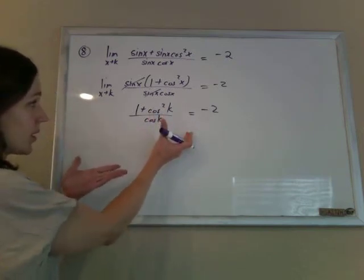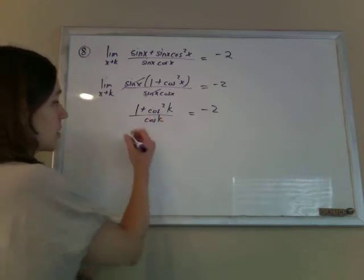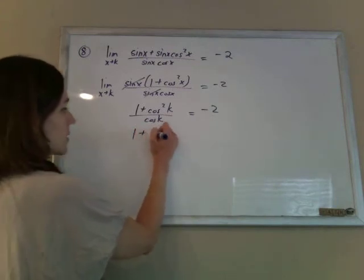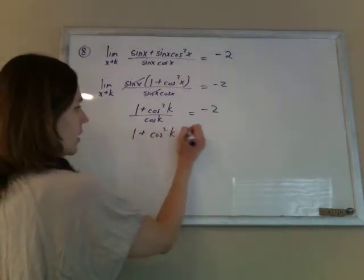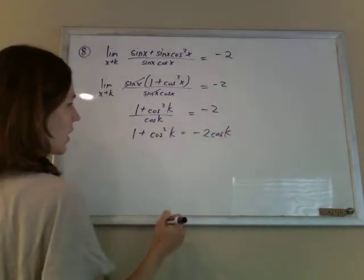And now we just have this lovely equation which we can solve. So I can do 1 plus cosine squared k equals negative 2 cosine k.